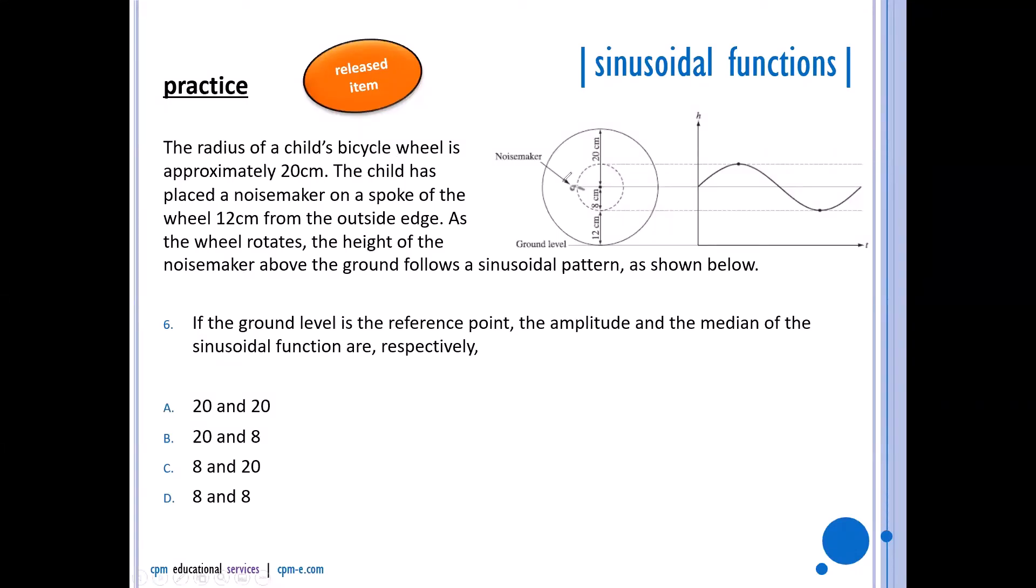The noisemaker itself, it says that it's 12 centimeters from the outside edge. Well, 12 centimeters from the outside edge means it's going to have an 8-centimeter radius here. Because the full thing was 20 centimeters—the full radius of the tire was 20 centimeters—so if I'm 12 centimeters from the outside edge, the noisemaker itself has to be 8 centimeters. So that's now going round and round like this.